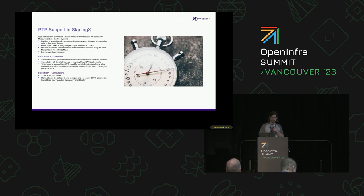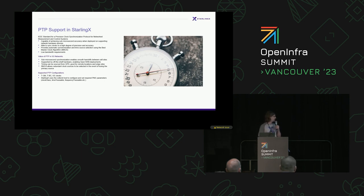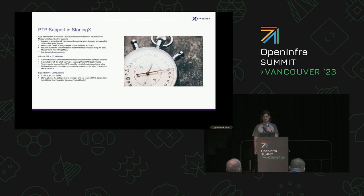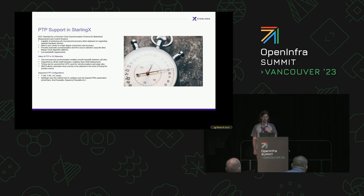Precision time protocol is an IEEE standard used for sub-microsecond accuracy on clocks. It's really useful for edge cloud applications because it can be run on generic hardware. It provides a best master clock algorithm that allows for a degree of redundancy and failover if clock sources are lost, and there's very low bandwidth requirements. In specific 5G applications, the sub-microsecond accuracy is essential for smooth handoffs between different cell sites, and there's a movement in the 5G space towards open RAN deployments, which the off-the-shelf hardware is very useful for.